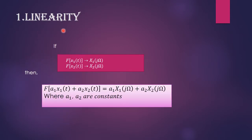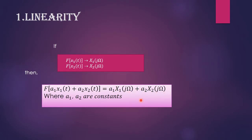The first property is linearity. If we take the Fourier transform of x1(t), we get X1(jω). The Fourier transform of x2(t) is X2(jω). Therefore, according to the linearity property, the Fourier transform of a1·x1(t) + a2·x2(t) is a1·X1(jω) + a2·X2(jω), where a1 and a2 are constants.